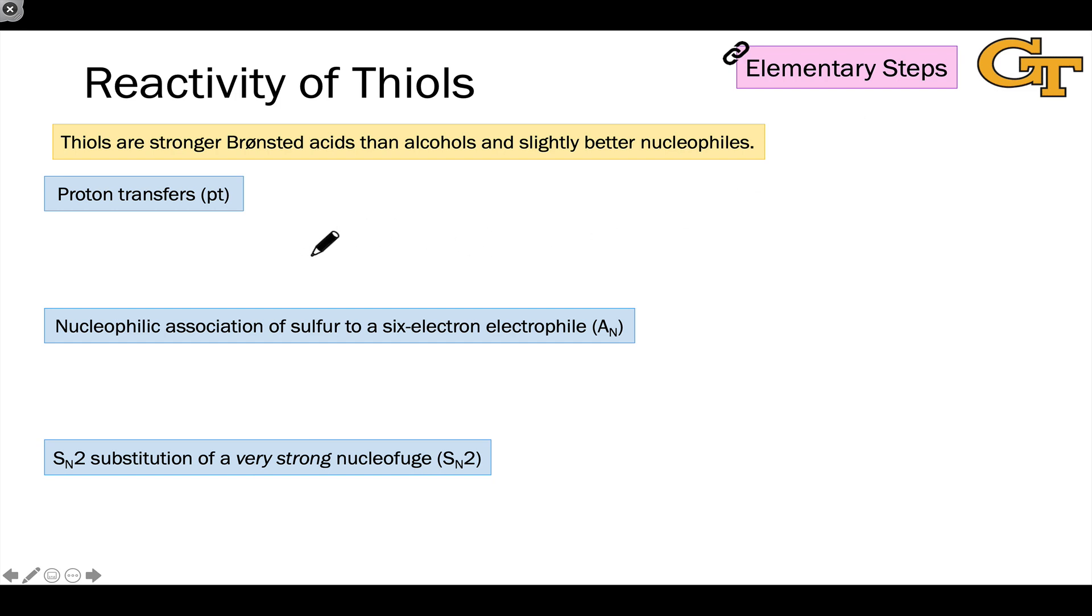The general points with thiols are that they are stronger Bronsted acids than comparable alcohols, and they're somewhat better nucleophiles than comparable alcohols, so we'll see sulfur acting as a nucleophile throughout this video.